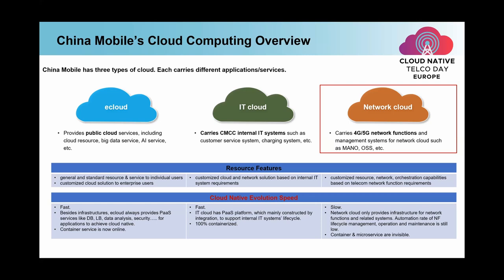By looking at all three clouds, as E-cloud and IT cloud have fewer telco features, they go faster on cloud native evolution. Our E-cloud is always providing PaaS services for applications; containers and microservice architectures are provided as services. Our IT cloud has a PaaS platform, and the containerization rate of all systems is very close to 100%. However, as the network cloud has very strong telco features, the cloud native evolution rate of network cloud is much slower. So for today's topic, the cloud native evolution is mainly about this cloud.